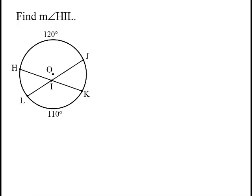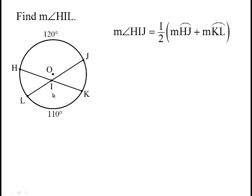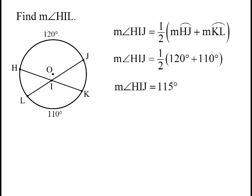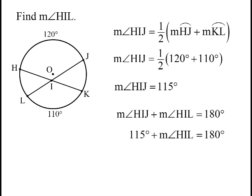This is really no different than the last problem. See if you can pause the video and figure out the measure of angle HIL. You know that HIL is going to be supplementary to angle HIJ. So if we can find HIJ, we'll be able to find HIL. HIJ is going to be half the sum of those arcs — 120 and 110 — the average of those arcs — that turns out to be 115. So then HIL will be supplementary to that.